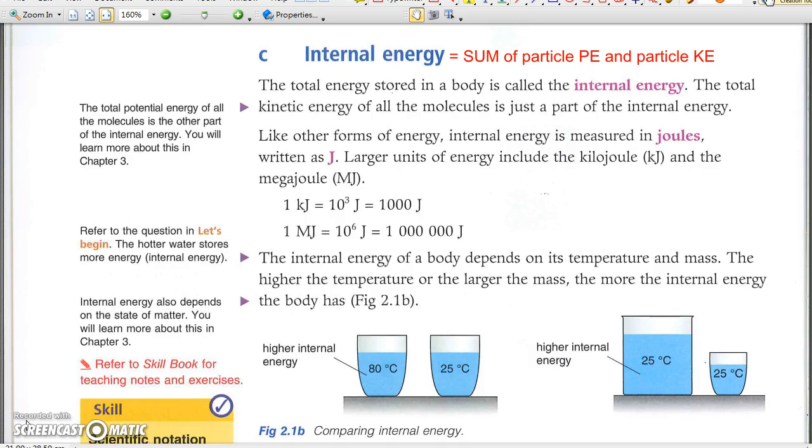C. Internal Energy. The internal energy of an object is the sum of kinetic energy and potential energy of its molecules. The average potential energy depends on the state of matter, while the average kinetic energy depends on temperature.